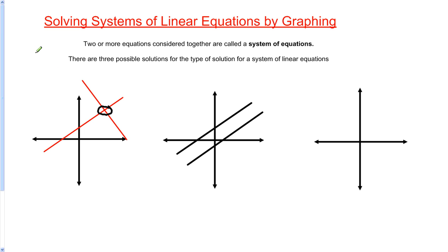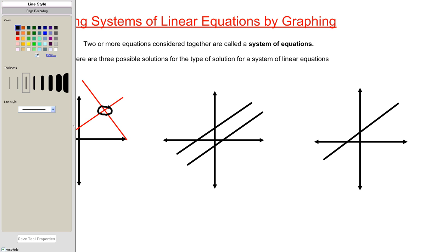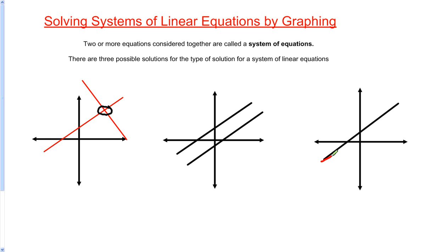The last type you could potentially have is one line like so, and I'm going to use a different color to show you this — another line right on top of it. Those lines are the exact same line, one on top of the other, and in that case we would have infinite solutions.